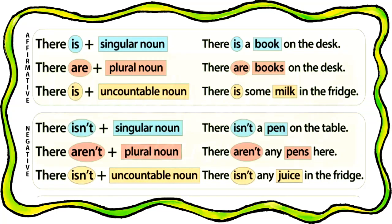For example, with a singular noun we say: 'There is a book on a desk.' For a plural noun: 'There are books on a desk.' For an uncountable noun: 'There is some milk in the fridge,' because milk is uncountable so we use 'is.' For the negative, we change 'is' to 'isn't' and 'are' to 'aren't.' For example: 'There isn't any juice in the fridge.'